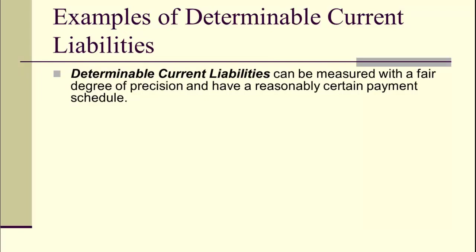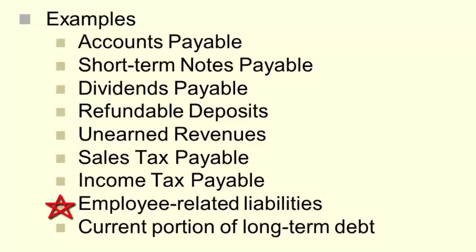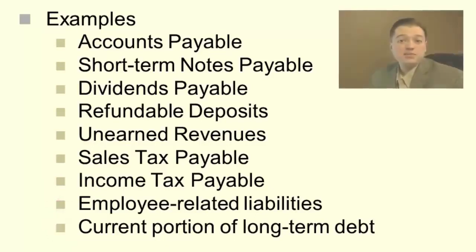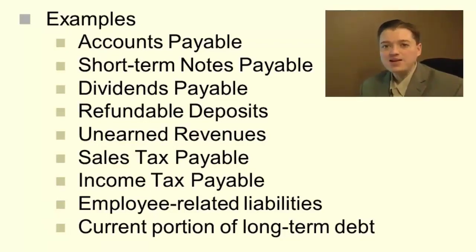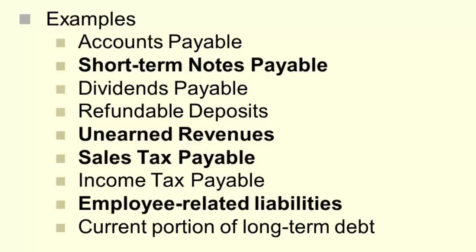Let's talk about determinable current liabilities. Formally, they can be measured with a fair degree of precision and we have a reasonably certain payment schedule. Examples of determinable liabilities — the liabilities we typically think of as current liabilities — include: accounts payable, short-term notes, dividends, unearned revenue, sales taxes, income taxes, employee-related liabilities from payroll, and the current portion of long-term debt. We don't have unlimited time to cover all of them, so we'll take a subset demonstrating the general principles. The four we'll work on are: short-term notes payable, unearned revenue, sales tax payable, and some employee-related liabilities.